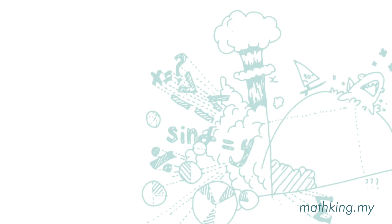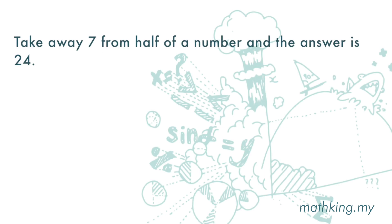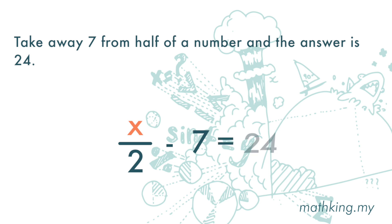Another example: take away 7 from half of a number, and the answer is 24. Take away 7 means minus 7. Half of a number — we do not know the number, so it is a variable. Let's take x to represent the number. To get half of the number, we divide x by 2. The answer is 24, so this is equal to 24. The equation is: x over 2 minus 7 equals 24.